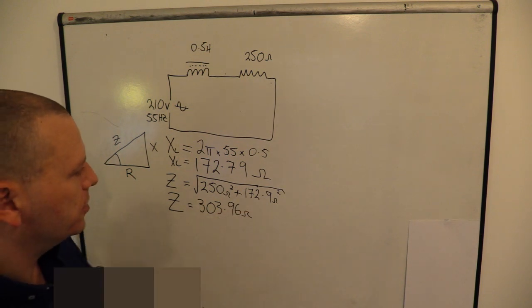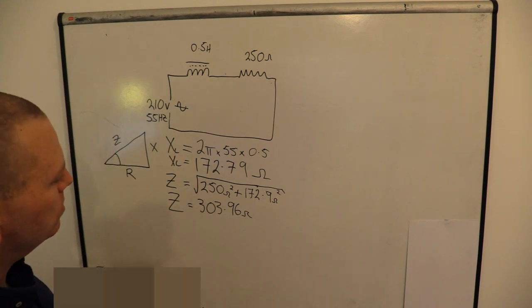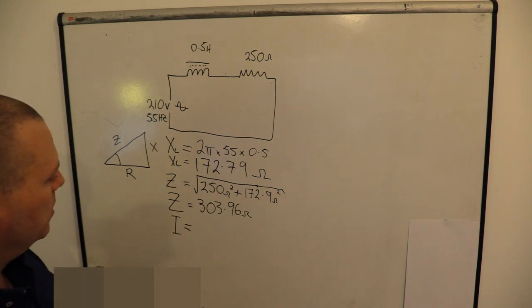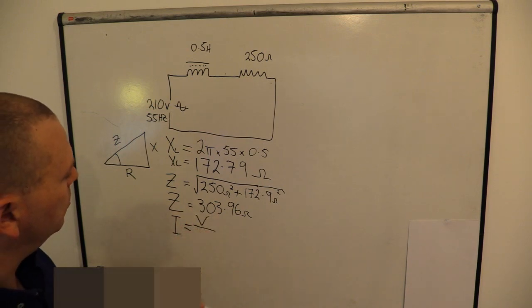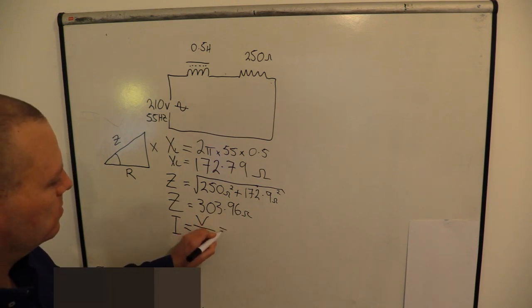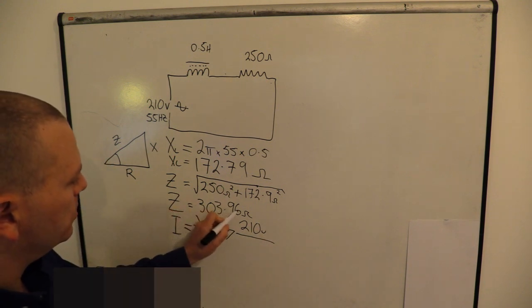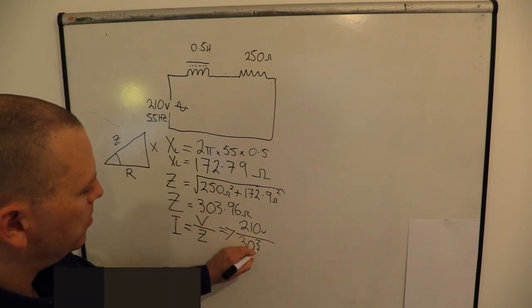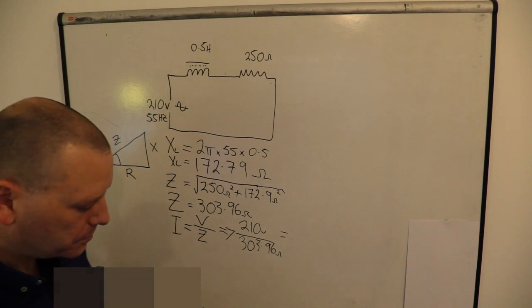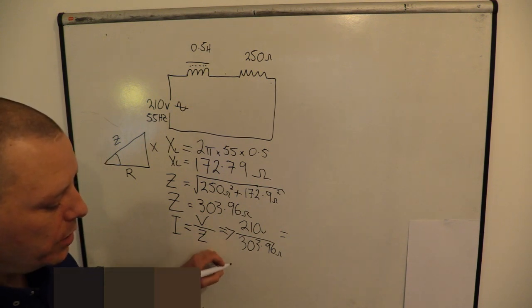So that's our total opposition to current, and now we're in a position to calculate the current in the circuit. It's just going to be Ohm's law. Ohm's law says that if we take the voltage and divide it by whatever's in the way — in this case we're going to use impedance — you'll get your current. That leads to 210 volts divided by our total opposition to current, 303.96 ohms, which gives us a current of 0.69 amps.